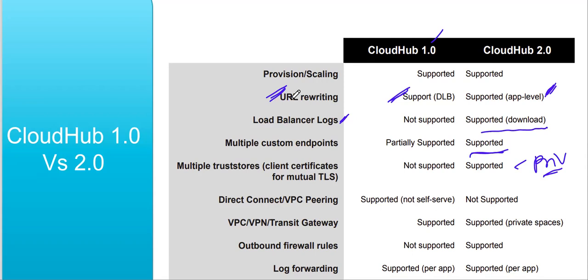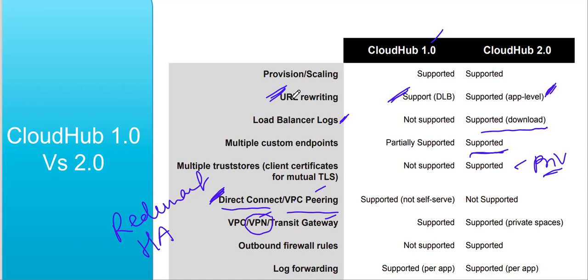Regarding connectivity options, CloudHub 2.0 has fewer options because direct connect and VPC peering are removed. Now we only have VPN and transit gateway. The intention was to make CloudHub 2.0 more self-service, since direct connect and VPC peering required contacting MuleSoft support. A big improvement in CloudHub 2.0 is redundant VPN, which provides high availability — during maintenance one VPN instance can be serviced while the other remains available.